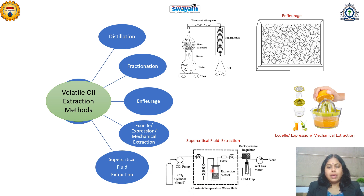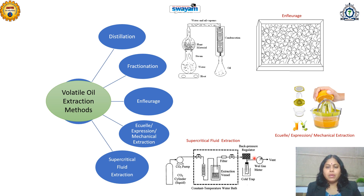In supercritical fluid extraction, gases that can be converted to fluid — especially CO2 — are converted to fluid at the supercritical point, at a particular temperature and pressure, and then passed through the aromatic plant material to extract the essential oil into a separator container. The temperature and pressure are then returned to normal, the fluid converts back to gas, which is separated out and can be recycled. This method has the advantage of no solvent residue and no need for further purification. In phytonics, various hydrofluorocarbon solvents and their derivatives are used to separate different types of phytochemicals.